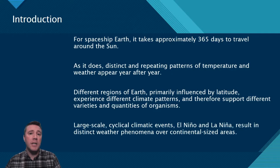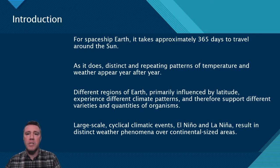El Niño and La Niña are large-scale cyclical events in the Pacific Ocean that each cause very distinct weather phenomena over large regions of the globe.